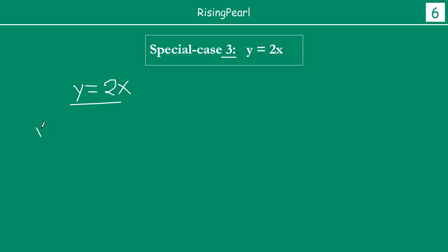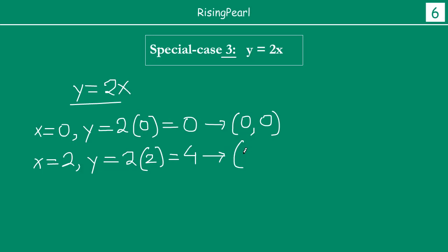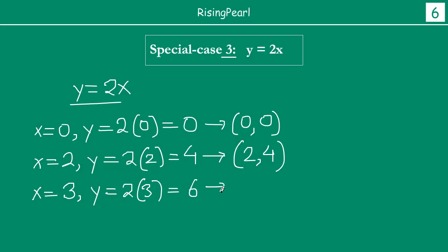At x equals to 0, y will be equal to 2 times 0, so y equals 0. This gives the ordered pair (0, 0). Now let us take x equals to 2; then y equals to 2 times 2, so y equals 4 — giving ordered pair (2, 4). Finally let us take x equals to 3; then y equals to 2 times 3, so y equals 6 — giving ordered pair (3, 6).